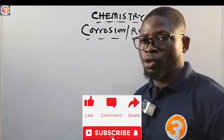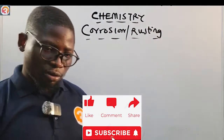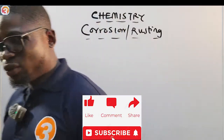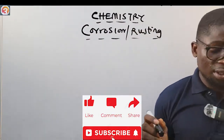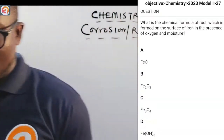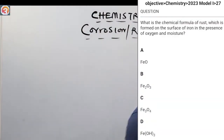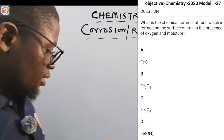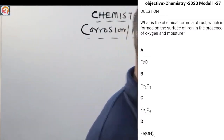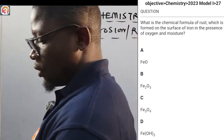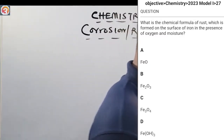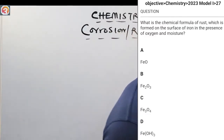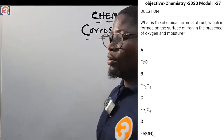Now let us go to the O3 School JAMB app and take some questions to show you that JAMB actually sets questions from this topic. This is the 2023 question number 27. It says: what is the chemical formula of rust which is formed on the surface of iron in the presence of oxygen and moisture? A: iron oxide FeO, B: iron(III) oxide Fe2O3, C: iron(II,III) oxide Fe3O4, D: iron hydroxide.